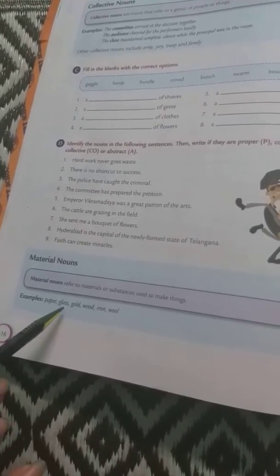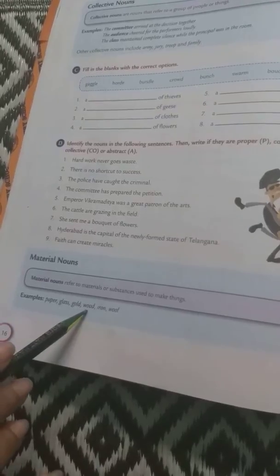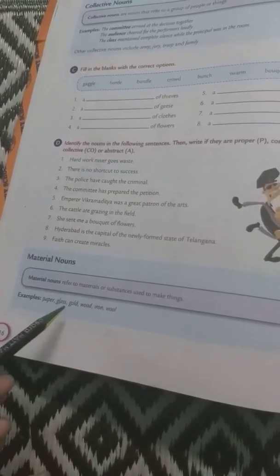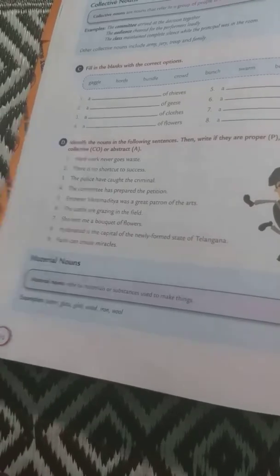These are paper, gold, silver, wood, wool, glass. These are known as the examples of material nouns.